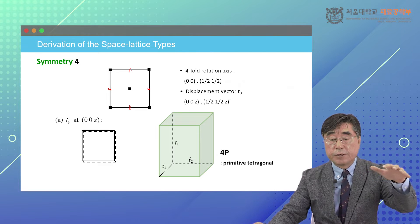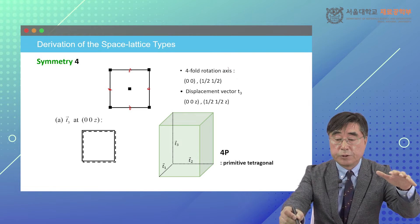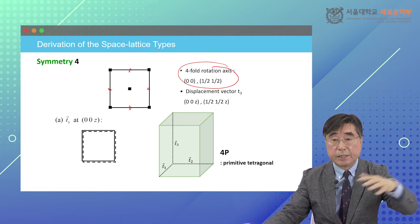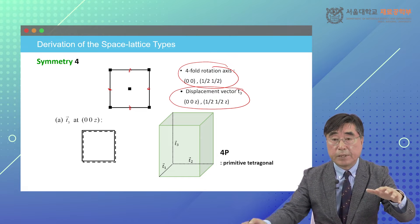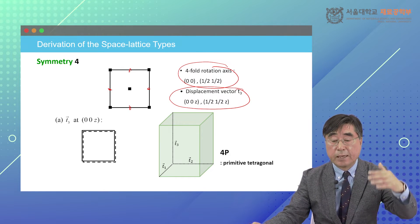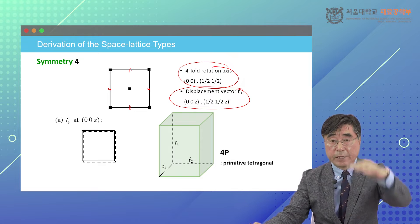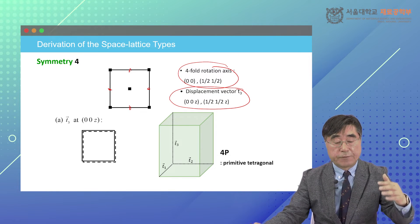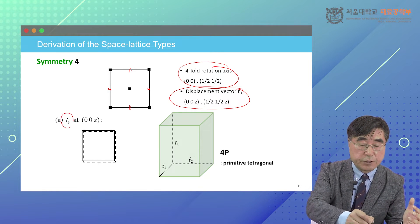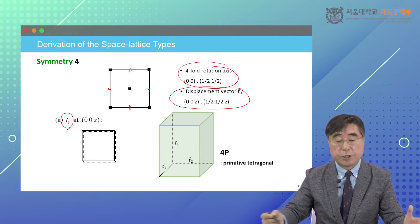The four-fold rotation axis position is 0,0 and half,half in the two-dimensional case. So displacement vector T3 can be located at the 0,0 G position and half,half G positions. First, we define the T3 vector at 0,0 G.